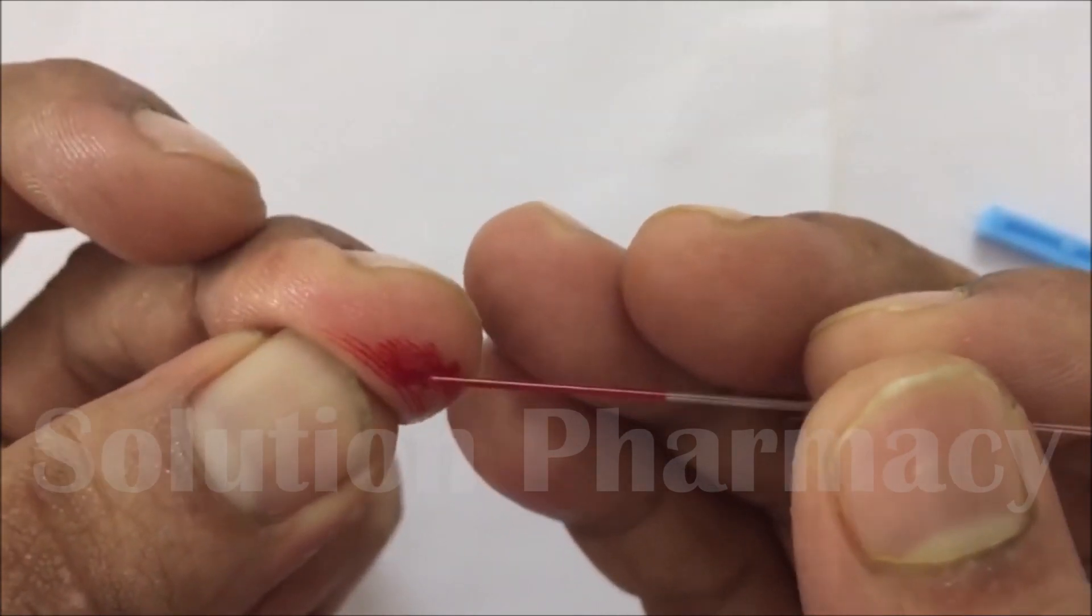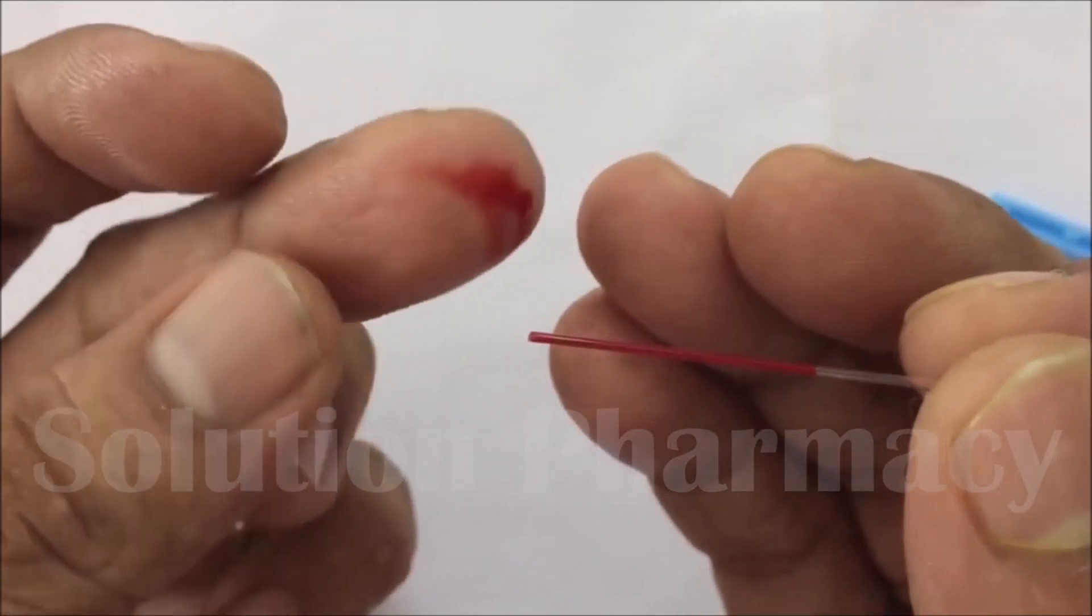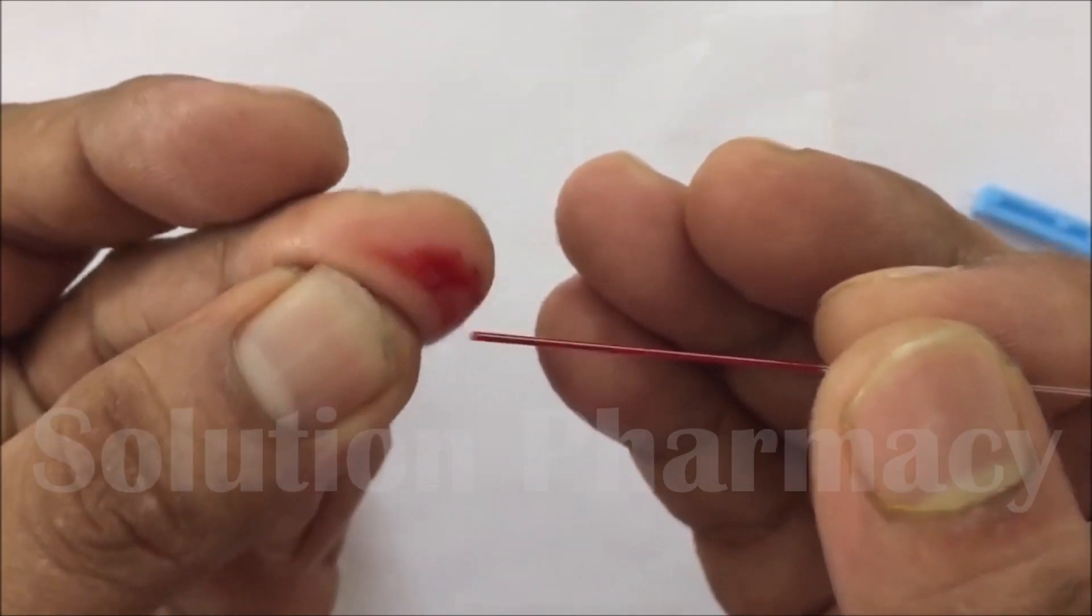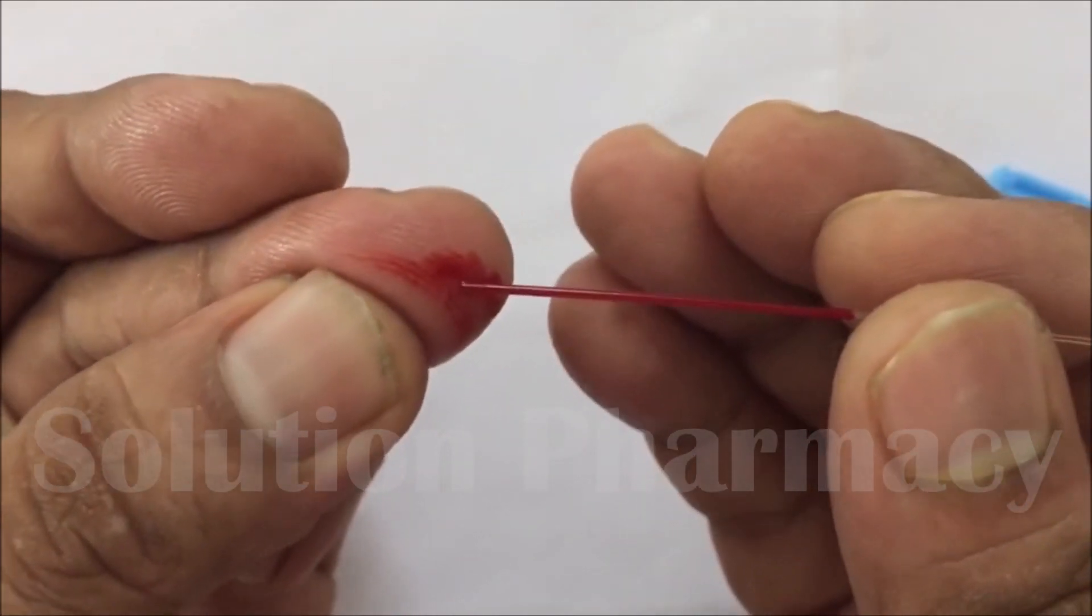When we touch the tip of the capillary tube into the blood, you have to start the stopwatch and note the time when blood starts to enter the capillary tube. After filling the capillary tube with blood, wait for 30 seconds.